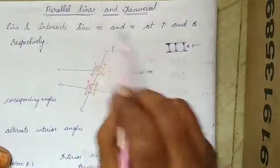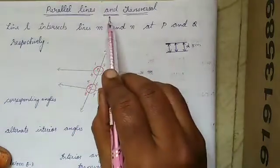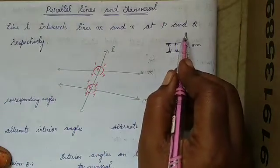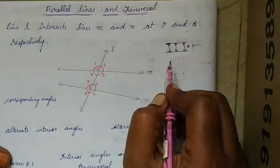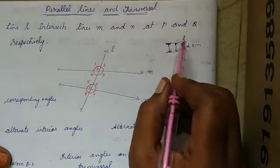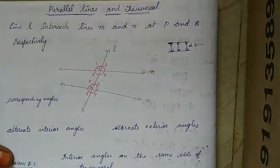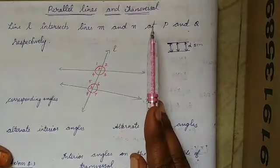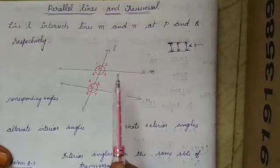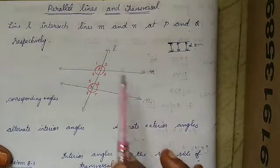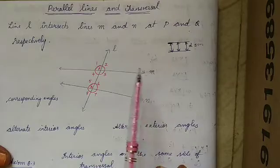The first topic is parallel lines and transversal. Transversal means the line which cuts these two lines, passes through these two lines. That line is called a transversal line. We are going to learn everything about parallel lines and a transversal line here.